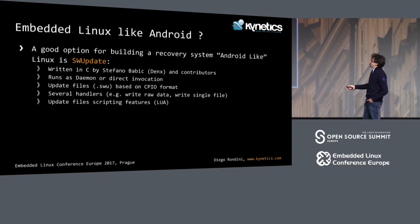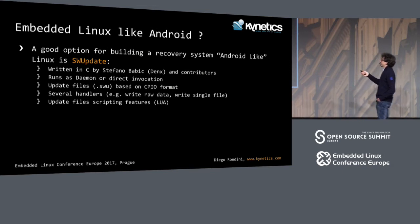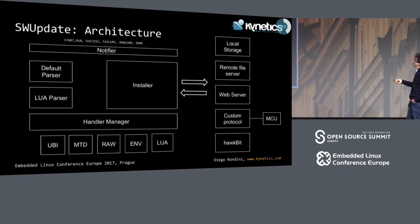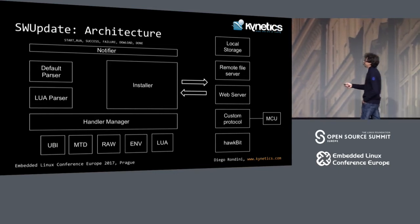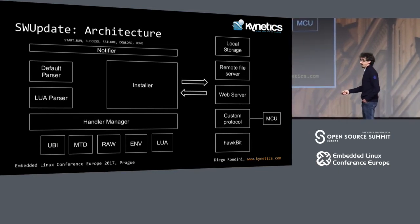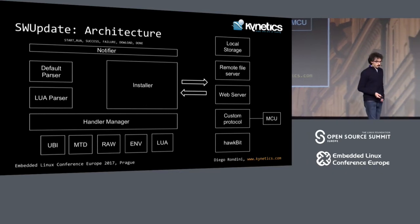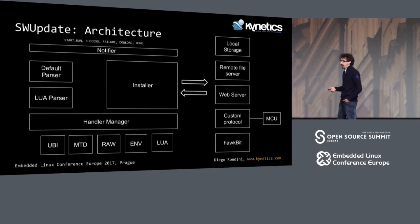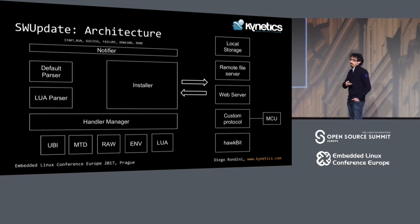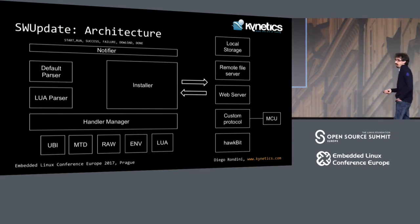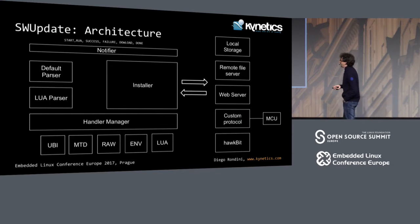SWUpdate defines an update file format — something already available in Android, which uses CPIO archives. It has several handlers to manage UBIFS images or RAW images, block devices, or entire partitions. It can change the U-Boot environment, write single files, and handle a great variety of options.